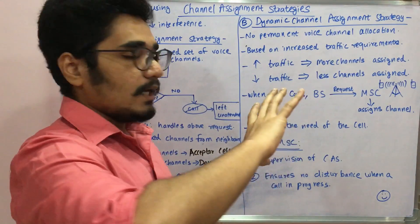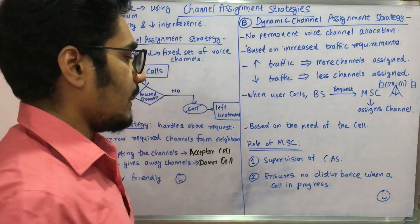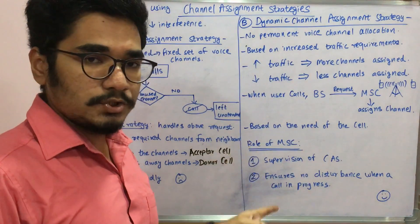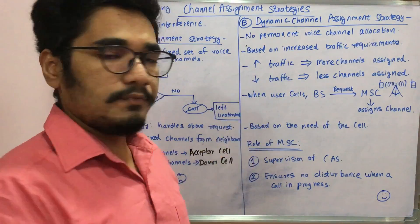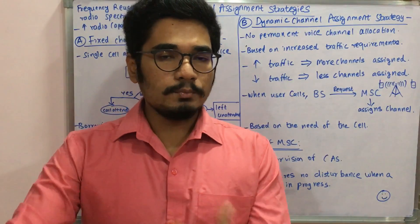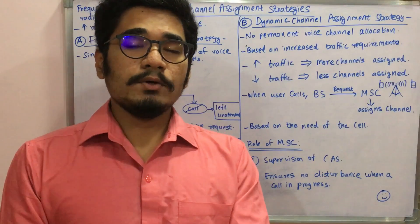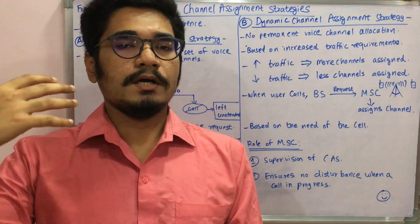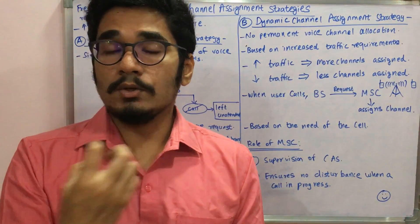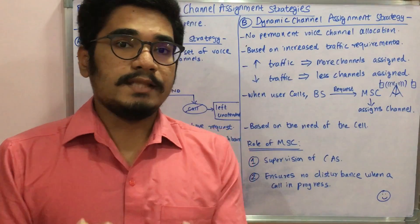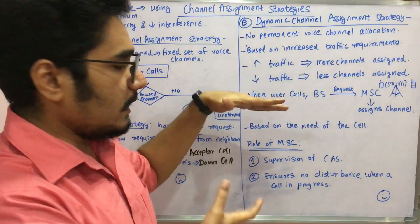The MSC has two main functions. First, it supervises all channel assignment strategies. Second, it ensures there is no disturbance when a call is in progress — for example, if radio coverage is poor, the voice may break or be at low frequency. The MSC manages these issues to maintain call quality, which is why it plays a central role in dynamic channel assignment.